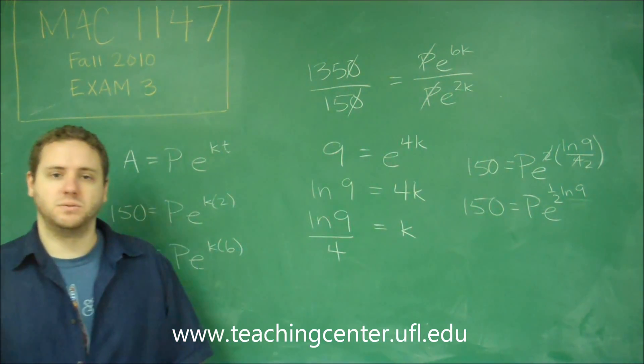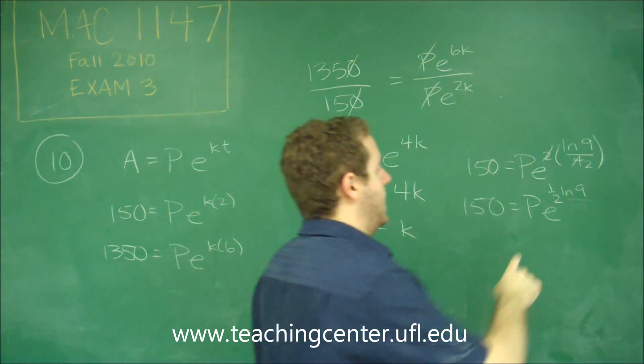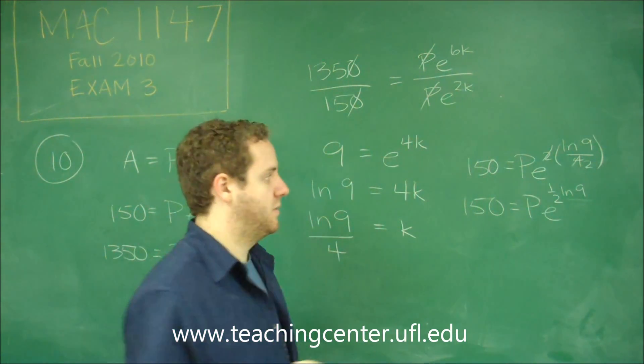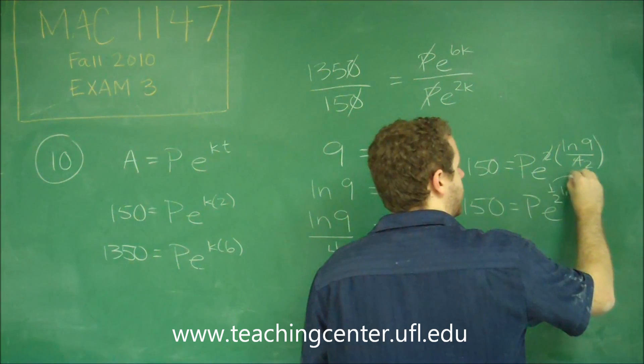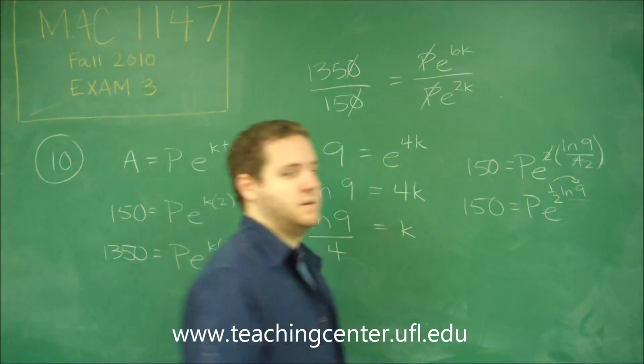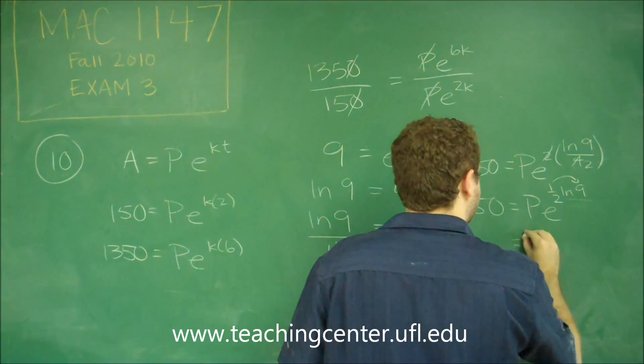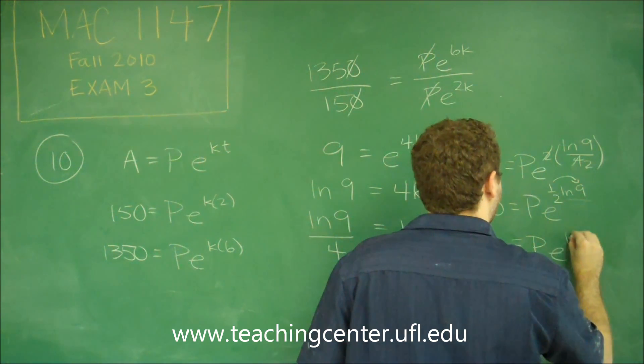1 half times something and divided by 2 are the same thing. The reason you want to think about that is that now this 1 half can be a power because it's a coefficient in front of the ln. 9 to the 1 half power is 3 because that's the square root. So this is equal to PE to the ln 3.